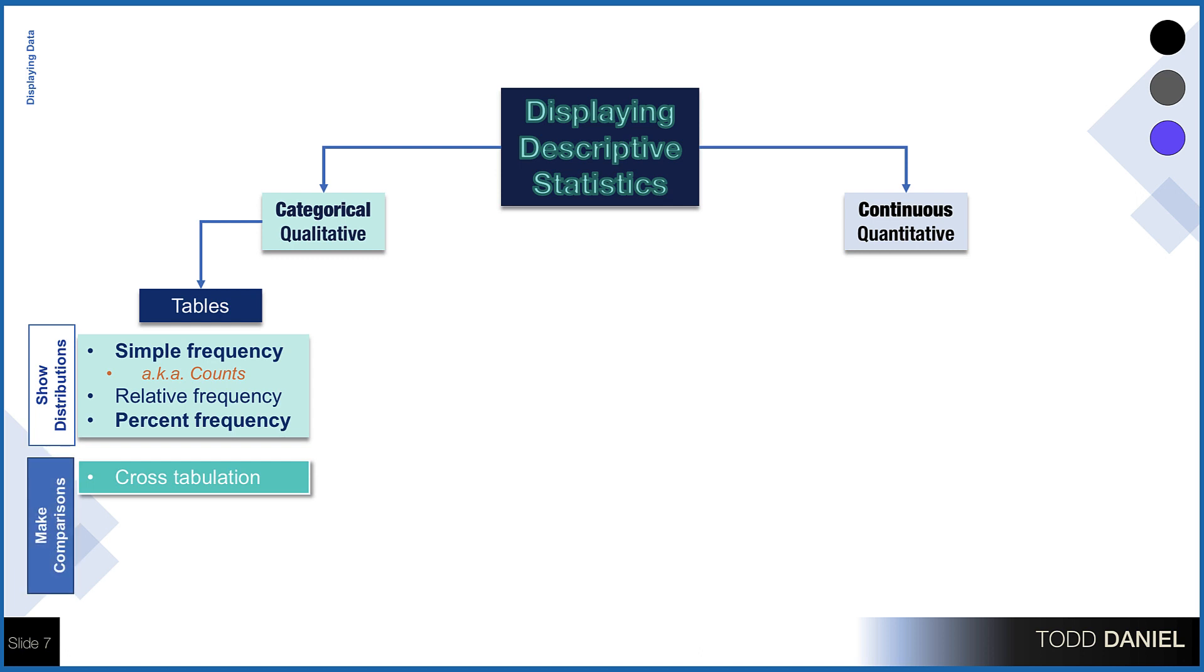So for categorical data, we could show the distribution within our data by describing single categorical variables in a simple frequency table. Simple frequency is the same as counts of the data. We could also use relative frequency or percent frequency. If we wanted to make comparisons between two categorical variables, we would use cross-tabulation. Our options for graphs are the bar chart and the pie chart for describing single categorical variables. For comparing two categorical variables, we could use the stacked bar chart or the side-by-side bar chart.